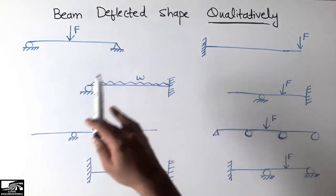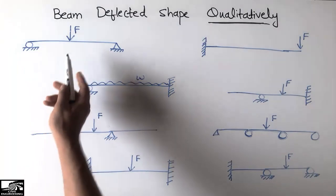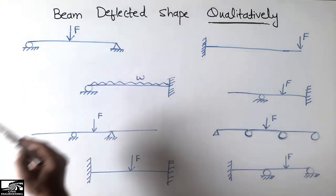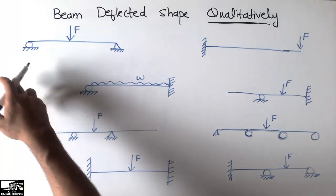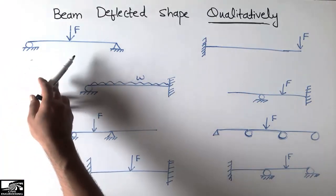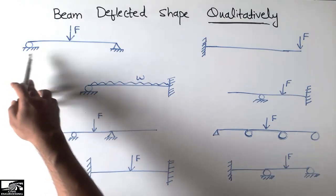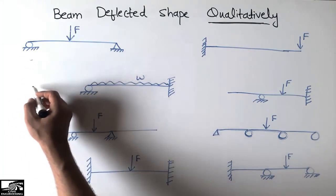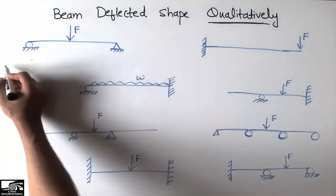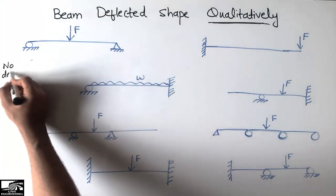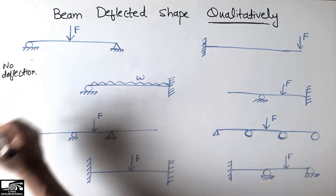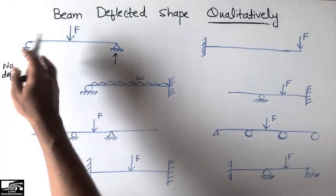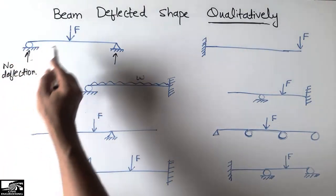Let's consider the first one: a simply supported beam with a roller and hinge support at the two ends. First of all, we should know what type of supports we have and what resistance they are providing. The roller and hinge supports are providing only vertical resistance. There will be no deflection at those supports, but there will be rotation because they do not resist moment.